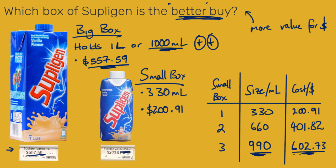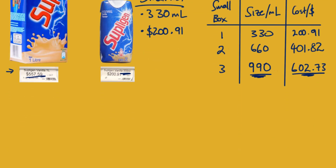With the big box you get a thousand milliliters for 557 dollars and 59 cents, so the big box is the better buy. Now, how can we know if that's right? We could try to work it in a different way. At first we put them on a level playing field for the milliliters, so we could do it the other way around — we could make the dollar the level playing field.